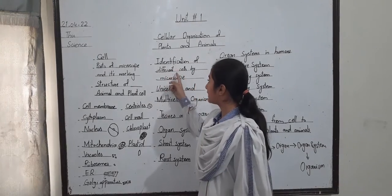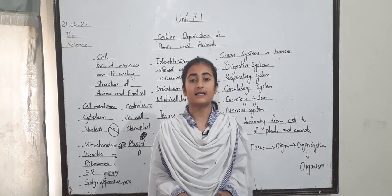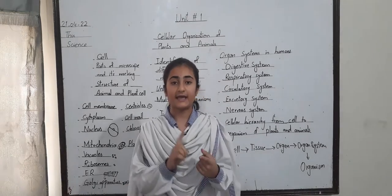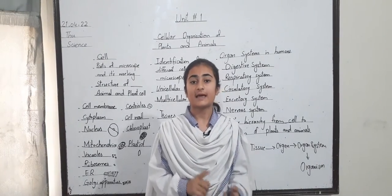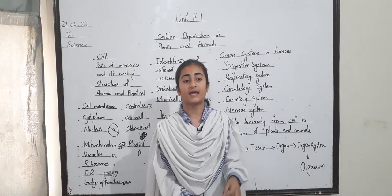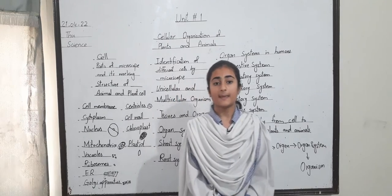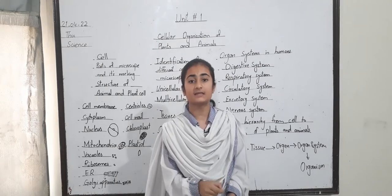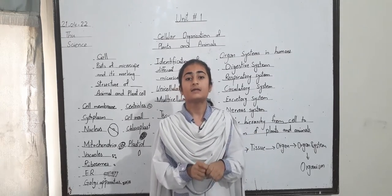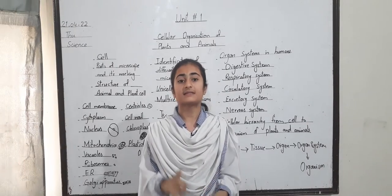Next I discuss about identification of different cells by microscope. Animal cells include different cells like red blood cells, white blood cells, platelets, fat cells, epithelial cells, endothelial cells, etc. Plant cells include collenchymal cells and parenchymal cells, vascular bundle, etc.